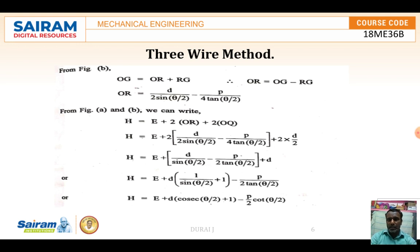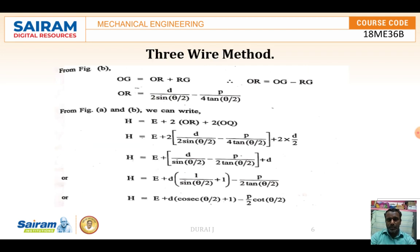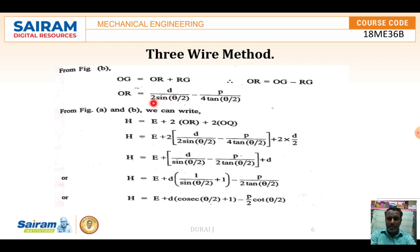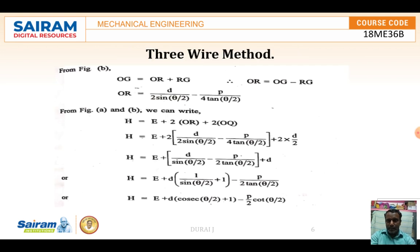Now OG = OR + RG, so OR = OG − RG. Therefore OR = D/(2 sin(θ/2)) − P/(4 tan(θ/2)). From figures A and B we can write H = E + 2(OR) + 2(OQ), where OQ = D/2.